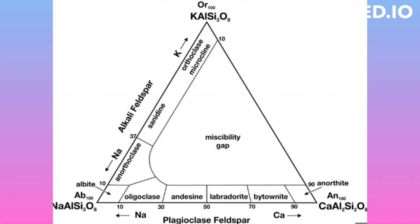The form stable at high temperatures is sanidine, which has a random distribution of aluminium and silicon atoms in its crystal structure. Low temperature forms include orthoclase, microcline, and adularia. These have an ordered arrangement of such atoms.